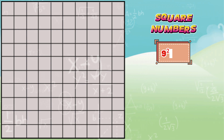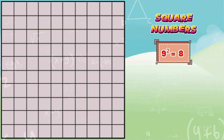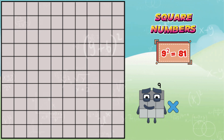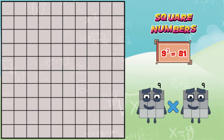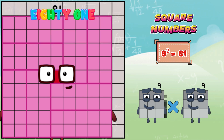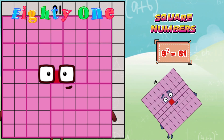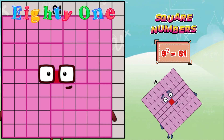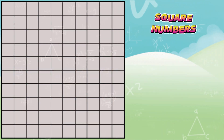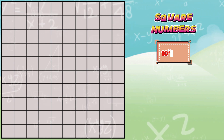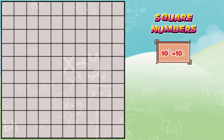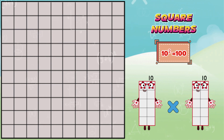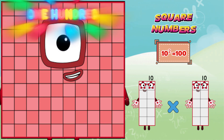Nine squared is equals to eighty-one, or nine multiplied by nine, is equals to eighty-one. Ten squared is equals to one-hundred, or ten multiplied by ten, is equals to one-hundred.